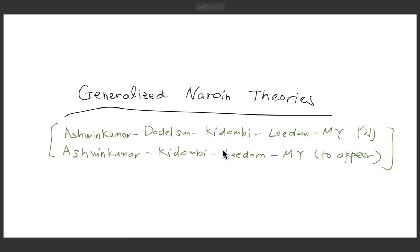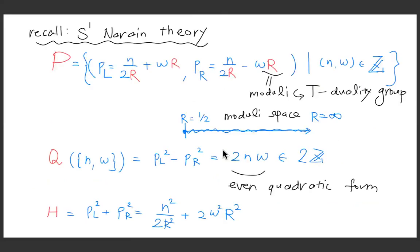What is the generalized Narain theory? Before describing the generalized case, let's recall the simplest case, which is the S1 Narain theory. Here we have the momentum lattice with left movers and right movers. There is a radius of the S1 which looks like a modulus. There is a T-duality transformation sending R to one over R, and the lattice is labeled by momentum and winding — two integers. Out of this momentum lattice, there is a nice combination: left movers squared minus right movers squared, which is always an even integer. That we call the even quadratic form which defines the lattice.